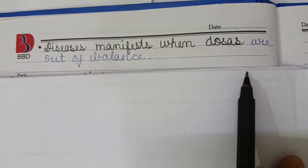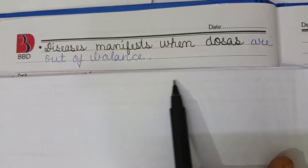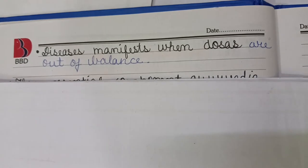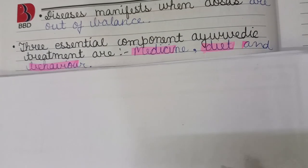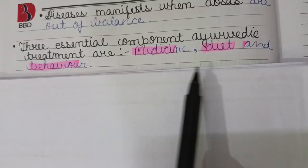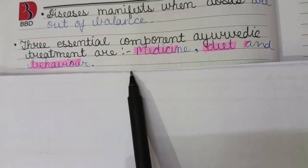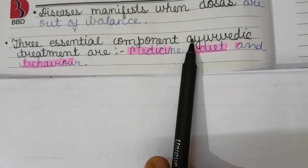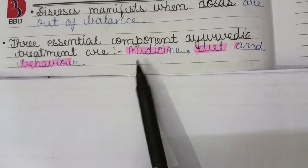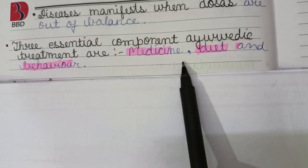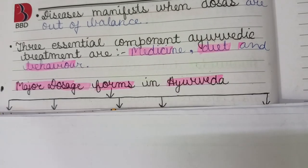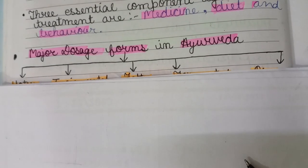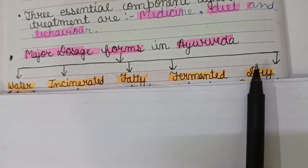Disease manifests when doshas are out of balance. The essential components of Ayurvedic treatment are medicine, diet, and behavior. Ayurveda works on these three components.